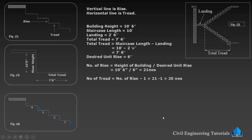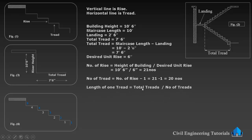So 21 minus 1 gives us 20 numbers of treads. Now we need to calculate the length of one tread. The length of one tread equals total tread divided by number of treads. Total tread is 7 feet and 6 inches.